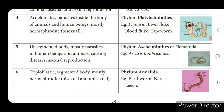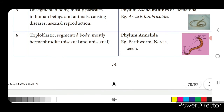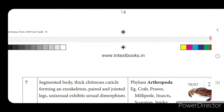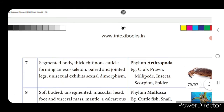Phylum Aschelminthes — example: Ascaris lumbricoides. Phylum Annelida — triploblastic, segmented body, mostly hermaphrodite meaning bisexual, and sometimes unisexual.